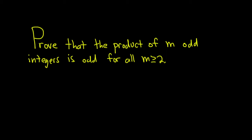In this problem we're going to prove that the product of m odd integers is odd for all m greater than or equal to 2. Let's go ahead and go through the proof. We're going to do this with a proof by induction.